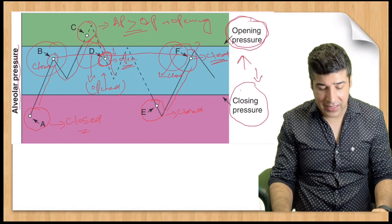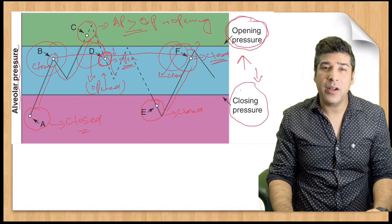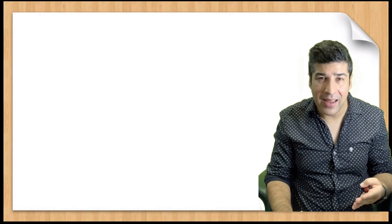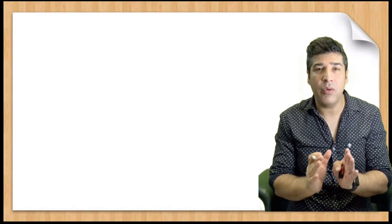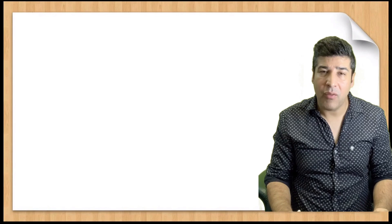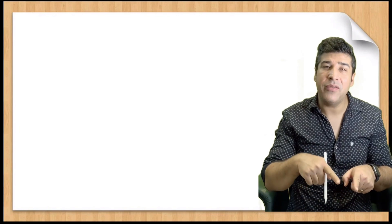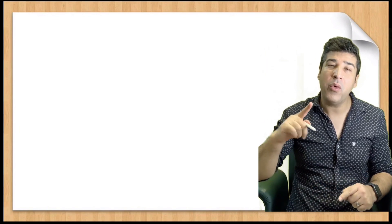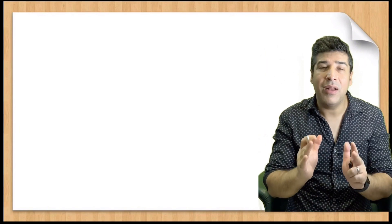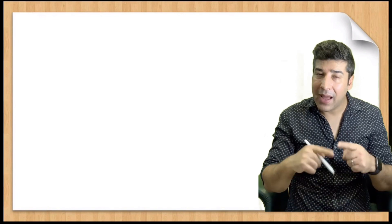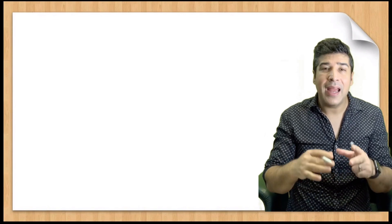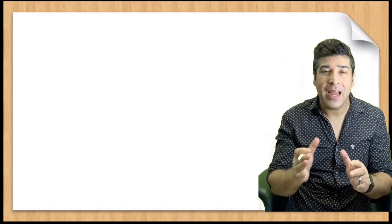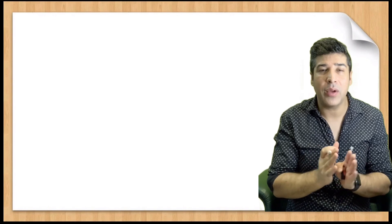The reason this matters is that if you apply PEEP early, it will prevent the alveolus from collapsing. Once collapsed, it is very difficult to reopen — you must increase pressure above the opening pressure. But if you apply PEEP before collapse, with pressure above the closing pressure, it prevents the alveolus from collapsing. Prevention is better than cure.